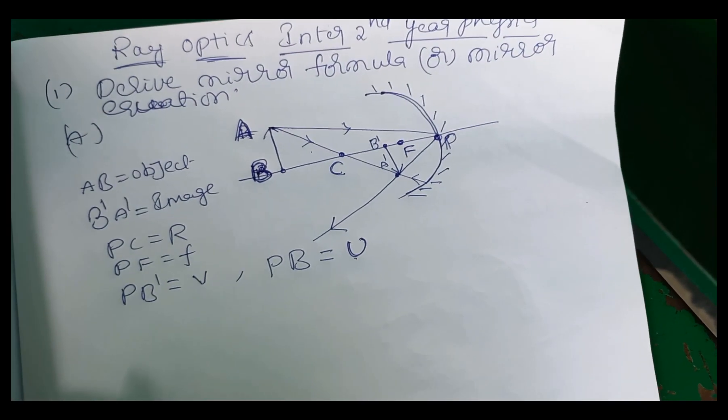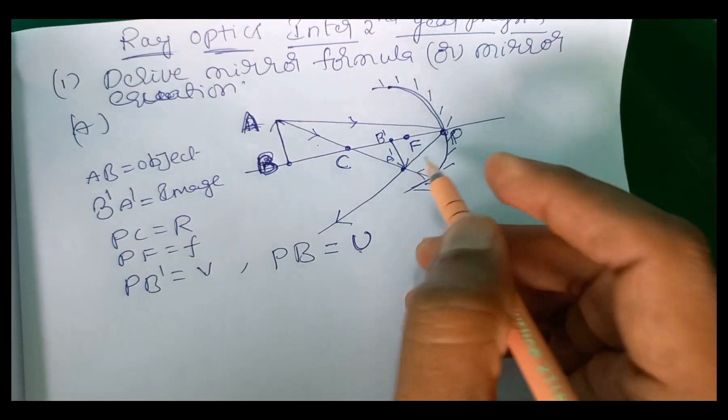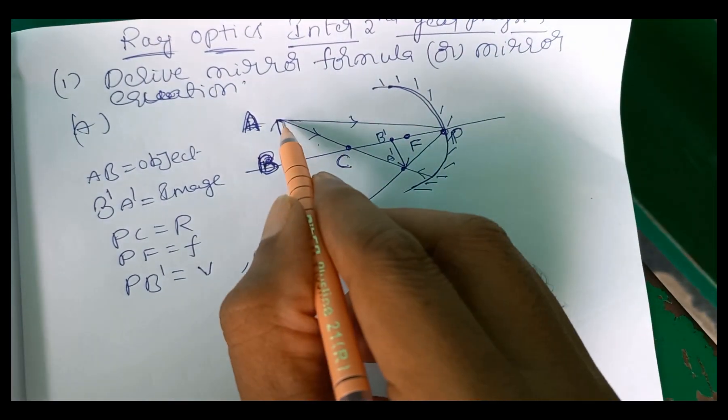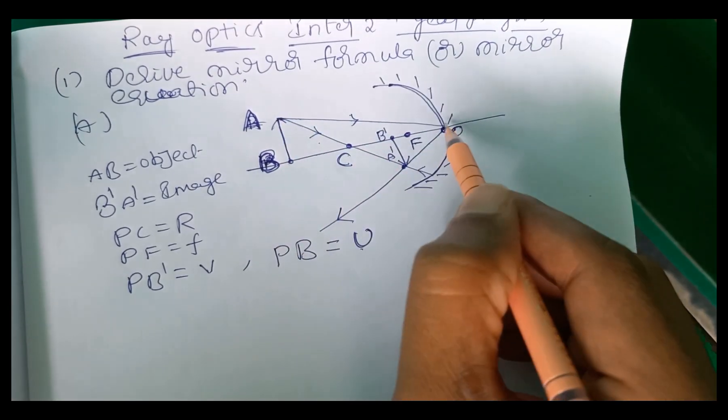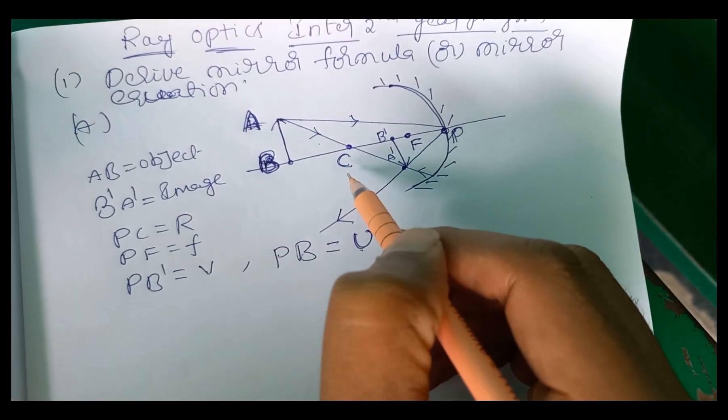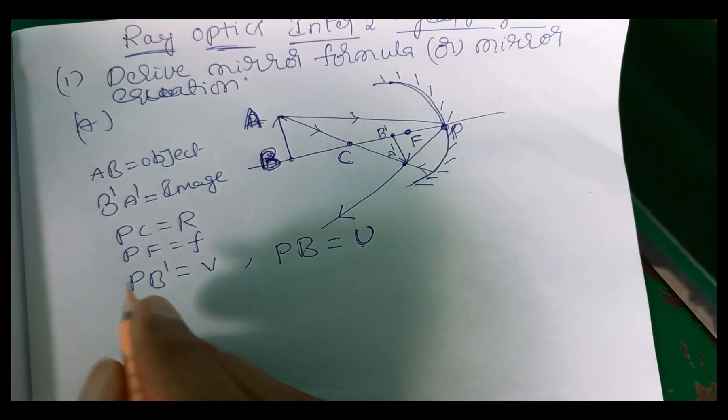Next, so this point is the mirror formula. We will try to see the mirror formula. So in this case, you will see two sets of triangles. Triangle A, B, P, it is a right-angle triangle. This point is A dash B dash P, it is also a right-angle triangle.